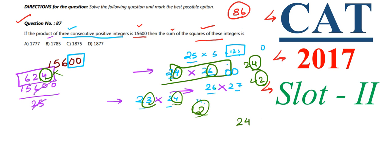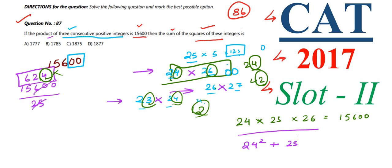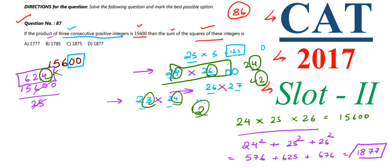So the three consecutive integers are 24, 25, and 26. Now we compute the sum of their squares: 24² + 25² + 26² = 576 + 625 + 676 = 1877.